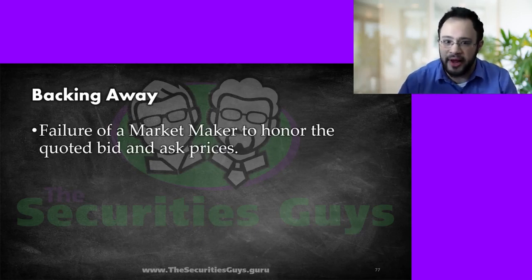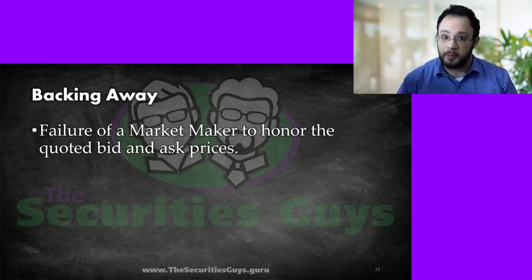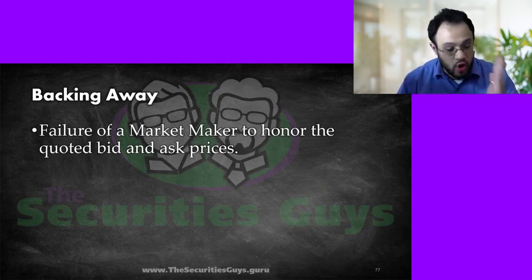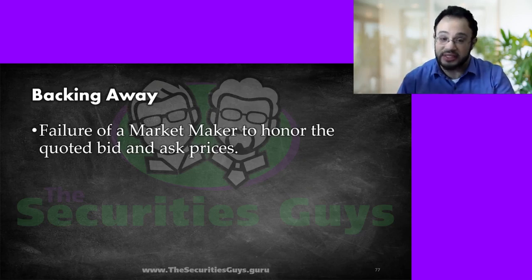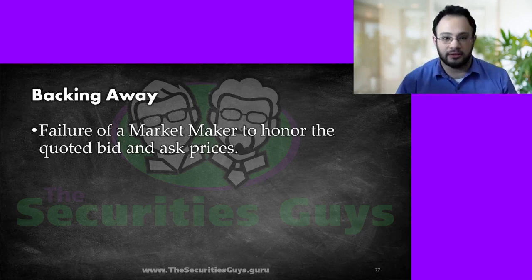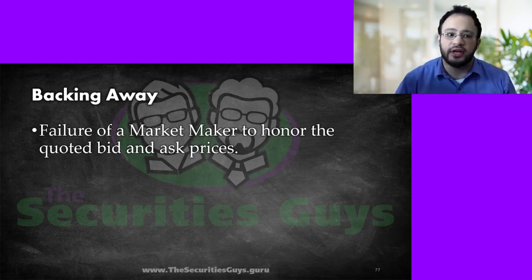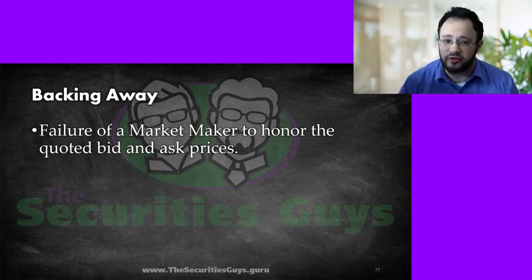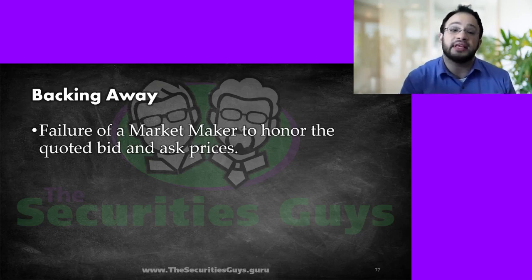Backing away refers to market makers — institutions that promise to always be willing to buy and sell a security. They quote a bid and an ask, what they're willing to pay an investor and what they're willing to sell to an investor at, and they always publish those quotes. Backing away is them not honoring one of those quotes — they publish a quote, someone says they want it, and they say 'oh wait, that was a mistake.' This is very, very bad. They can lose their ability to be a market maker — I believe it's 30 days — if they do that. The reason market makers exist is that without them the markets wouldn't work very well; they are integral and vital to the free flow of the market.